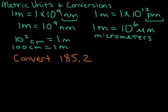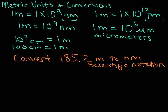The first example is converting 185.2 meters to nanometers, and we're going to write our answer in scientific notation. When we want to convert something, the first thing we're going to do is write down what we're starting with, with units — be sure to write it down with units, because we're going to use those units to help us know how to write our conversion factor in the next step. So: 185.2 meters. Then I'm going to make a bracket.